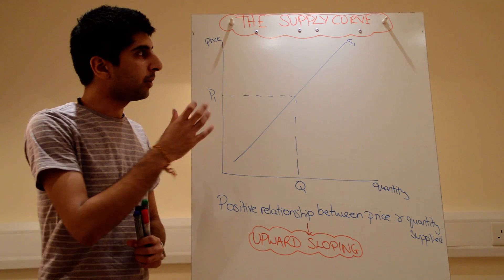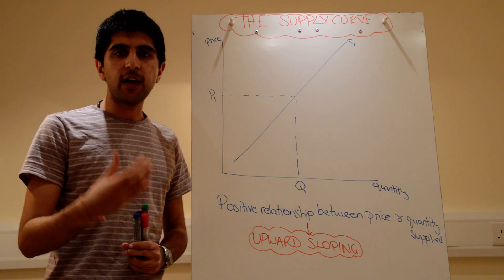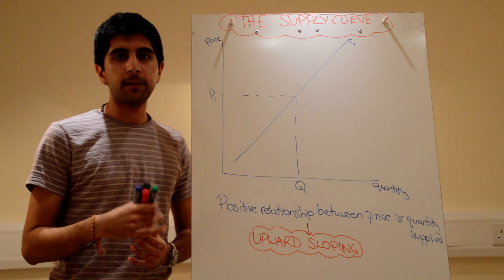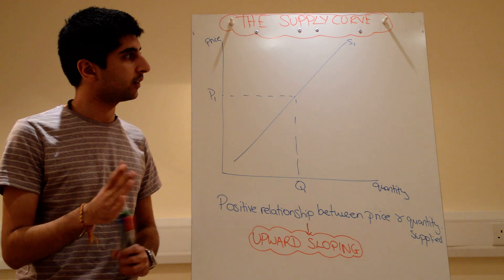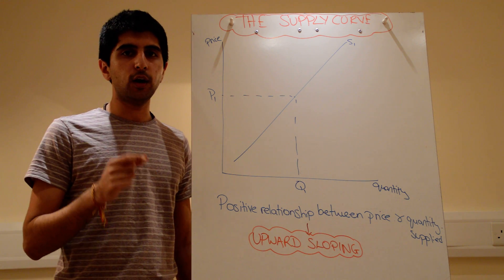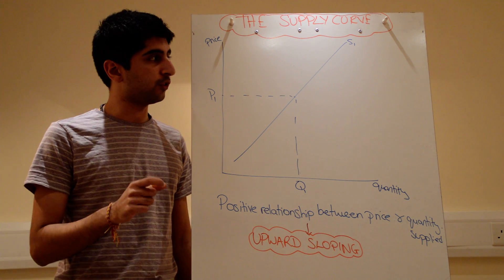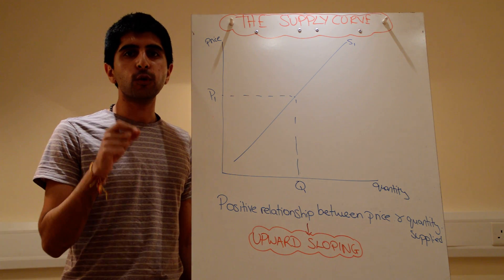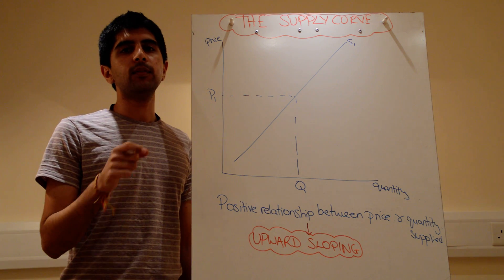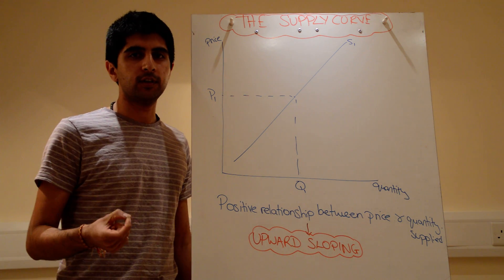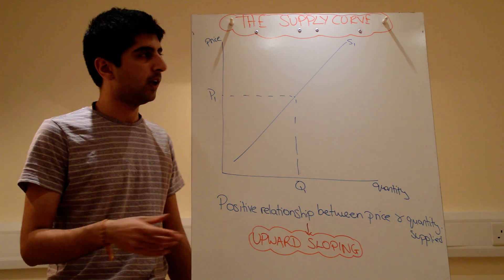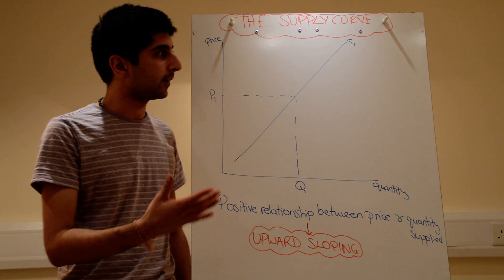Now that we've covered demand, supply becomes very simple to understand. Let's start off by defining supply in economics. Supply is defined as the quantity of a good or service that suppliers are willing and able to supply at a given price at a given time period. It's pretty much exactly the same definition as demand, but now just supply.